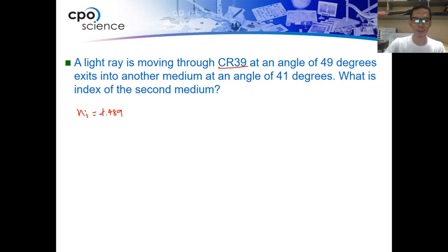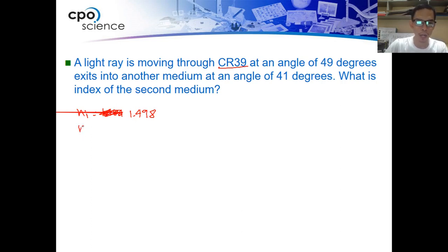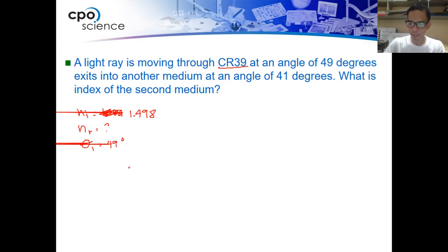So N sub I is 1.498. We are asked to find N sub R, which is missing. The angle of incidence is 49 degrees and the angle of refraction is 41 degrees.